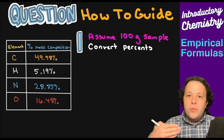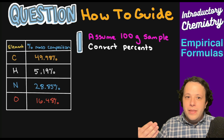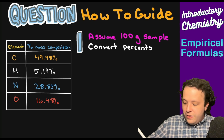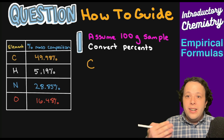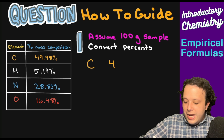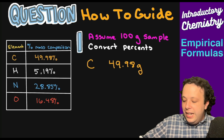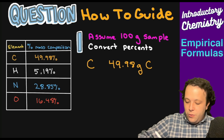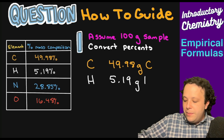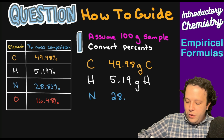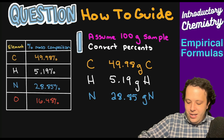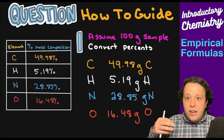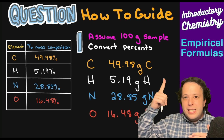Step one: assume that you have a hundred gram sample, which allows you to convert the percents into actual usable numbers. So we need to convert the percents. If you look at carbon, for example, it says we have 49.98%, so if we assume this is out of a hundred grams, we can simply write 49.98 grams of our sample is carbon. For hydrogen, we have 5.19 grams. For nitrogen, 28.85 grams. And for oxygen, 16.48 grams. When you add up all these values, it tells you within this whole caffeine sample how much of each element exists.